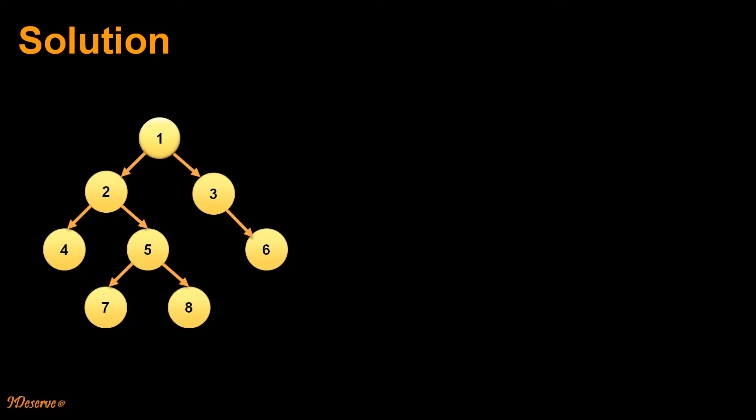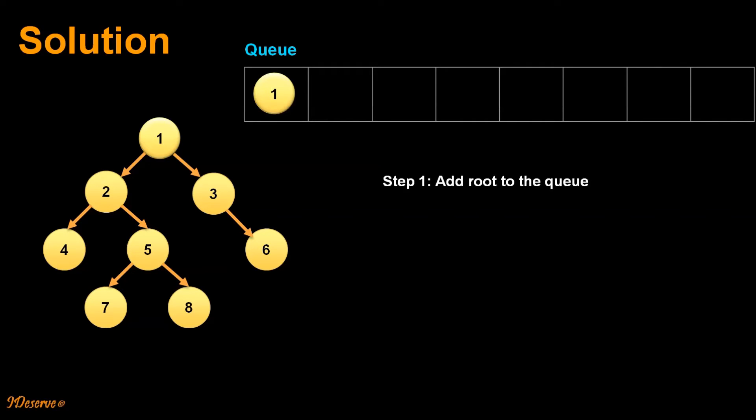Let us try to visualize the algorithm through one simple animation. So we have the tree as follows and we have one empty queue. We execute our first step which is adding root to the queue. So we added 1 to the queue.